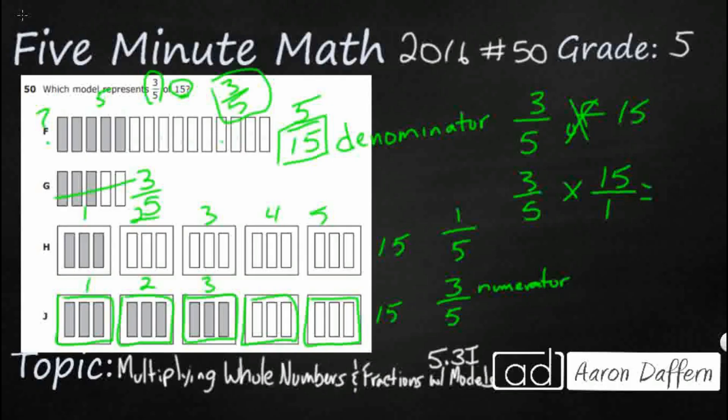Now we're going to multiply straight across. So 3 times 15 makes 45. 5 times 1 makes 5. So really, 3-fifths of 15 is 45-fifths. That's an improper fraction. How do we turn that improper fraction into a mixed number or whole number? We divide. Divide your denominator into your numerator. 5 goes into 45 9 times. So 3-fifths of 15 is 9.